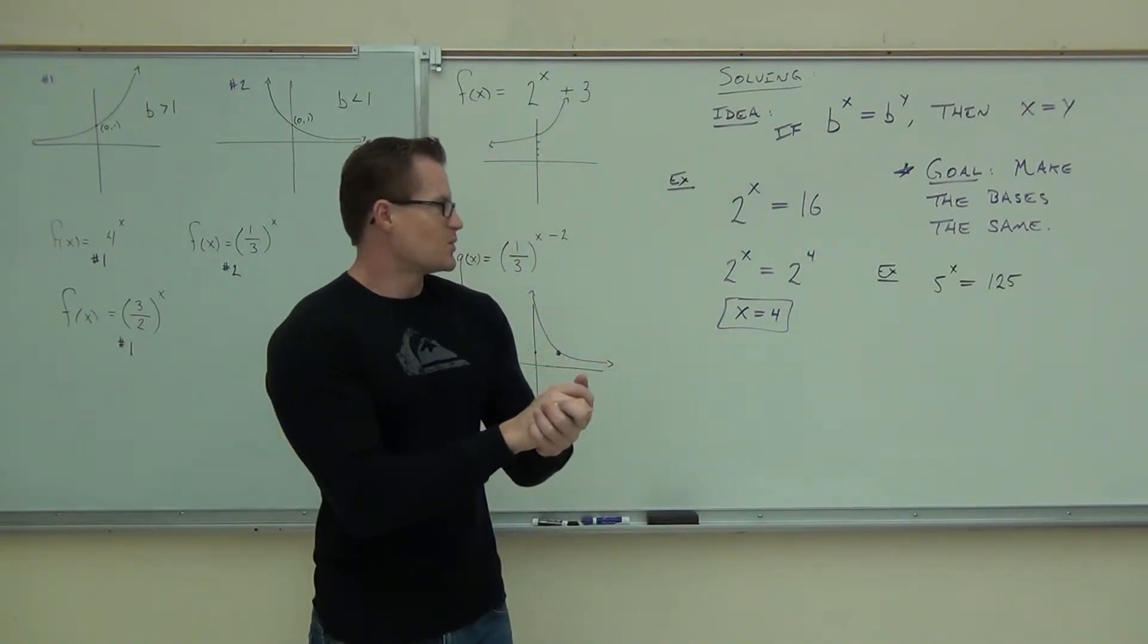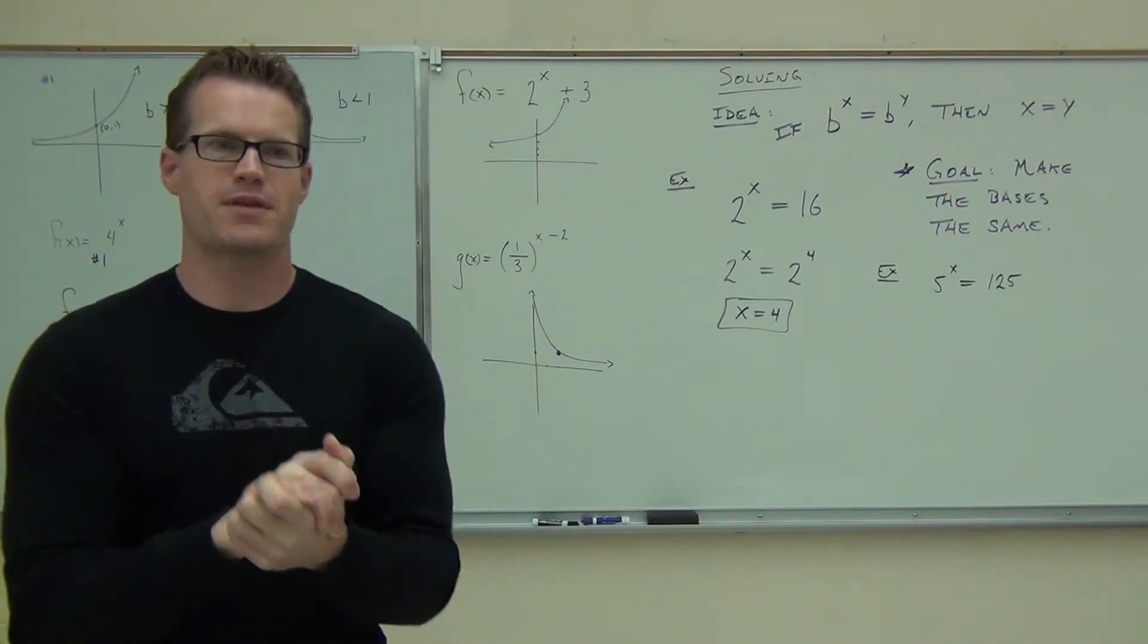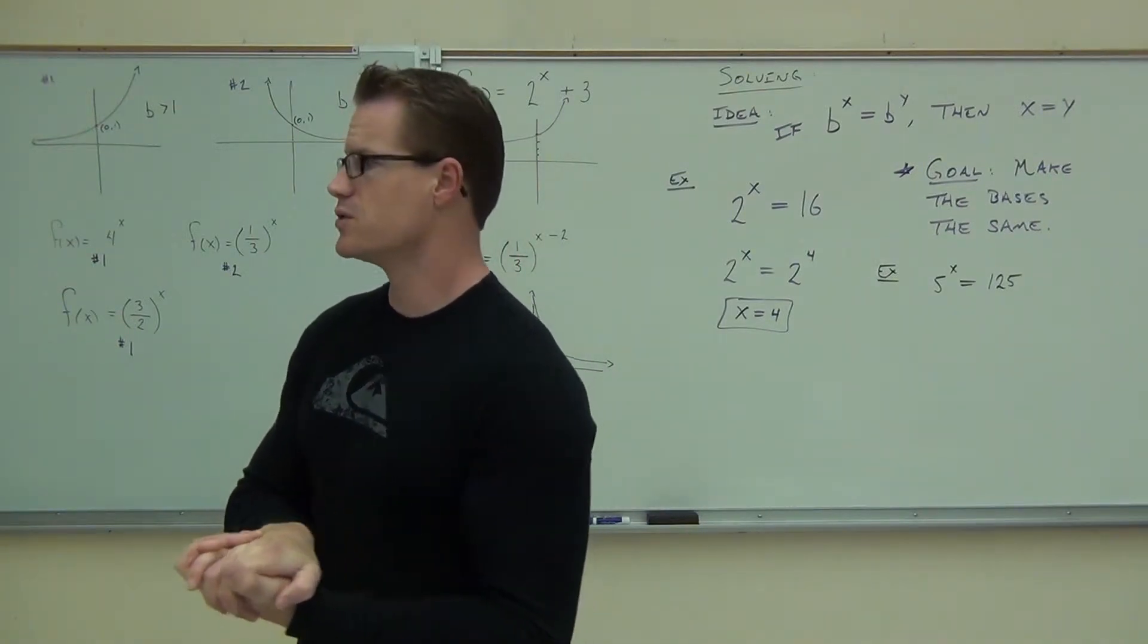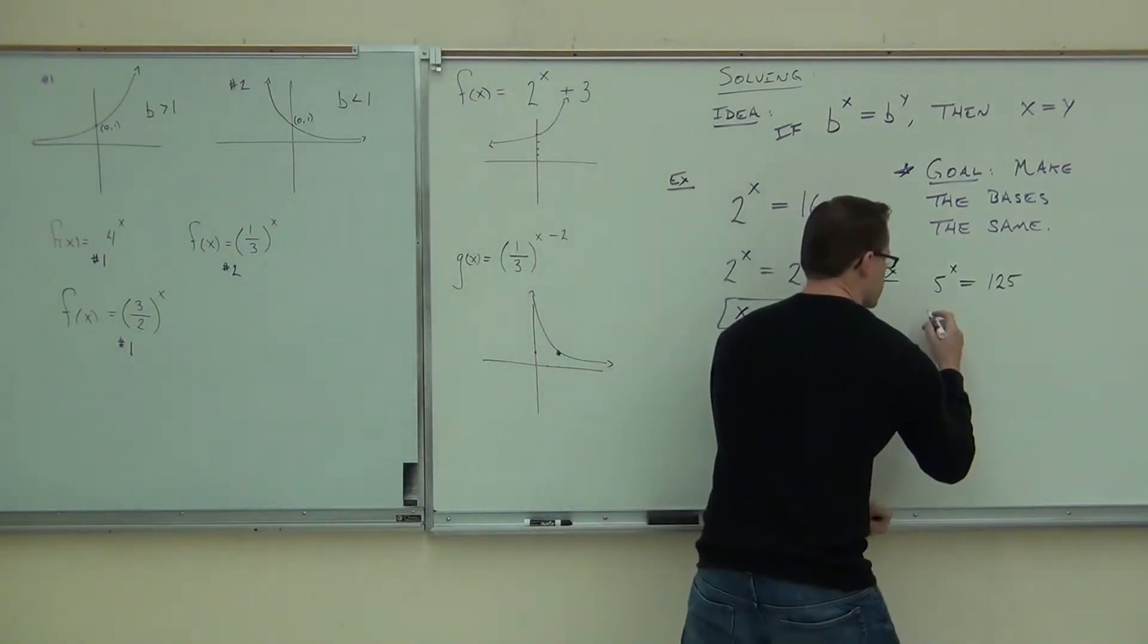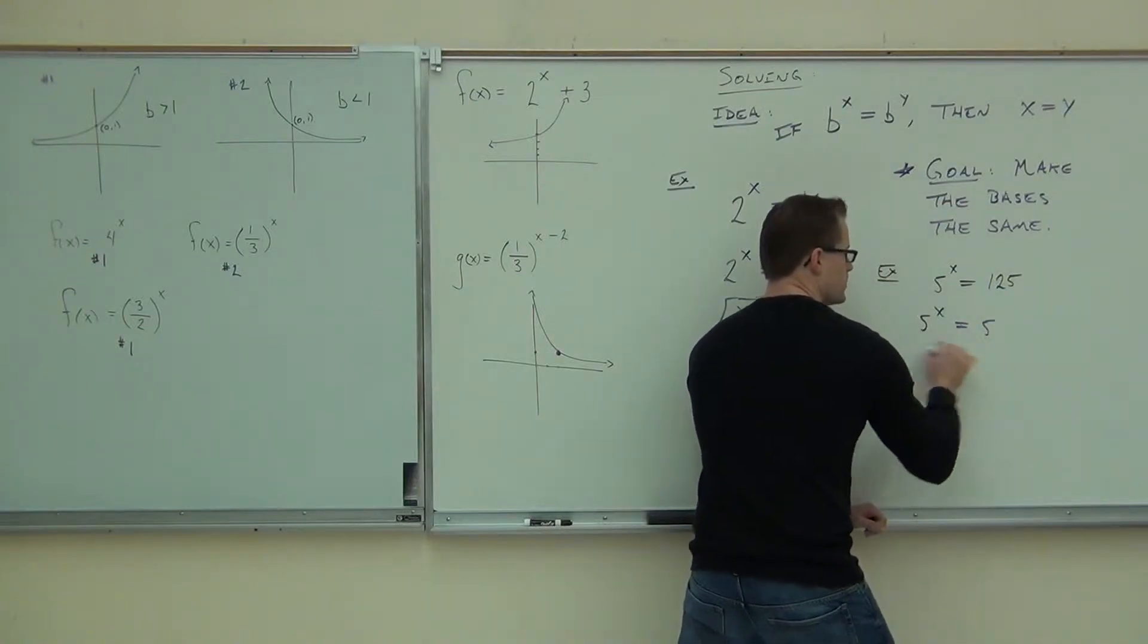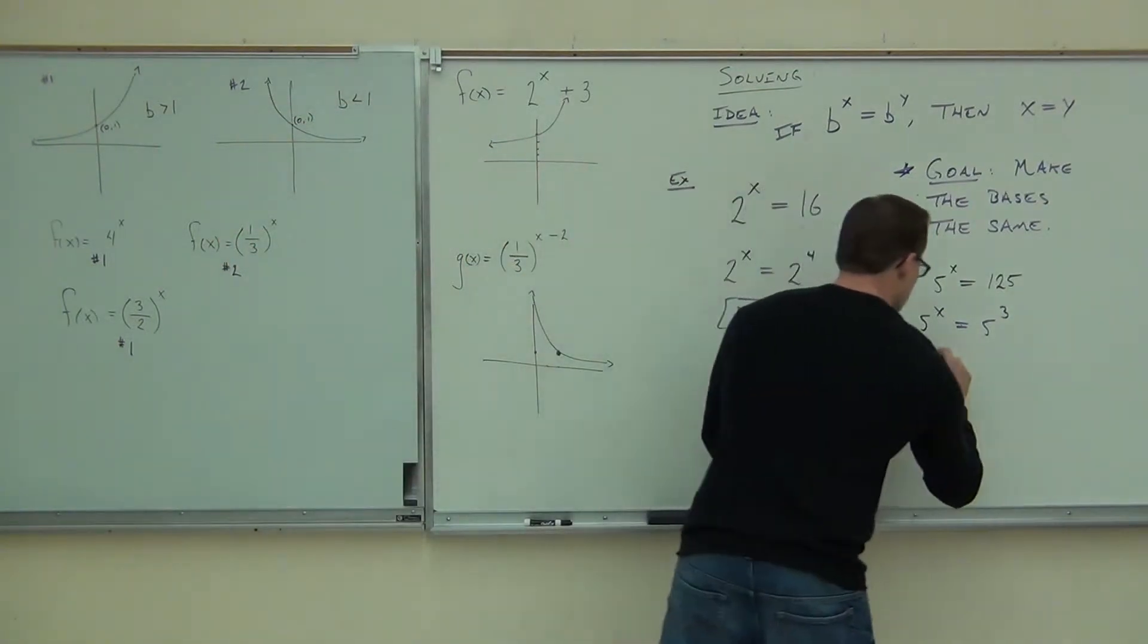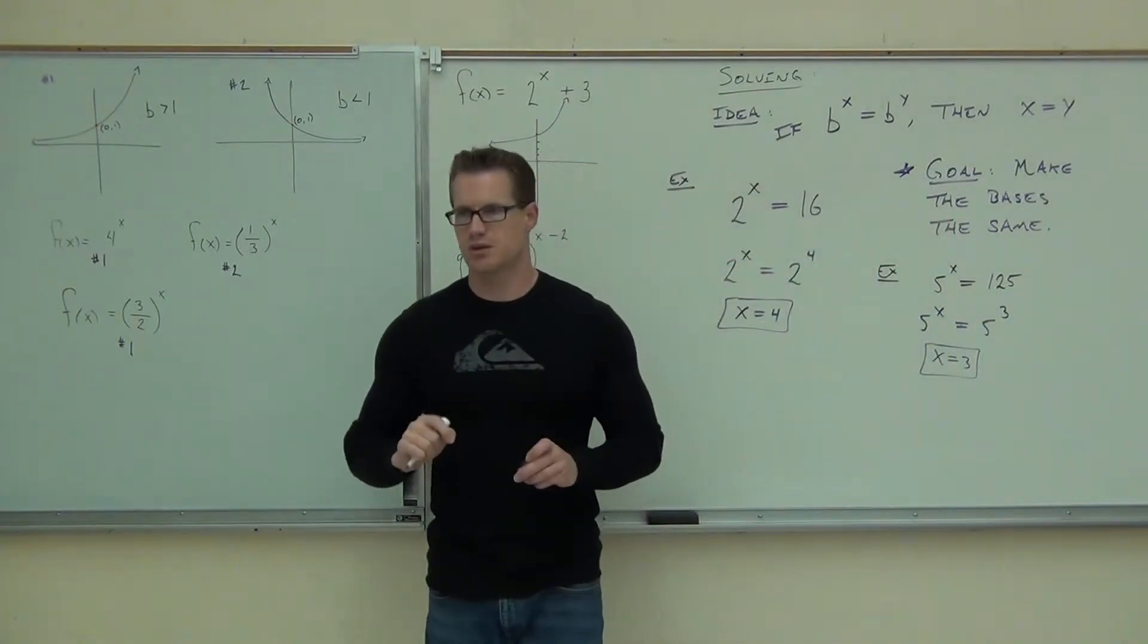5 to the x equals 125. Are our bases the same right now? No. We have 5 to the x equals 125 to the first. That's not going to work for us. We want 5 equals 5 as far as the bases go. Can you change 125 into a power of 5? 5 to the third. Great. So our whole goal here is to try to make this equal this, our two bases. 5 to the third, that's the same thing as 125. How much is x? 3. And you're done. As soon as you make those bases the same, you set your exponents equal to each other.